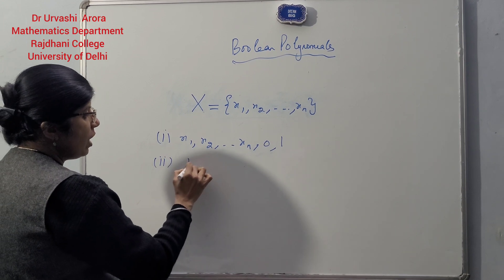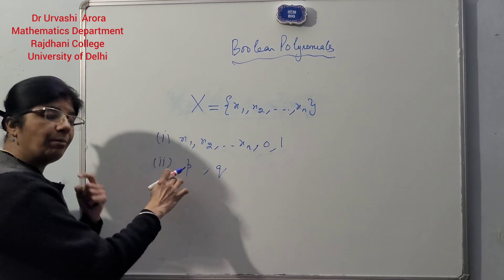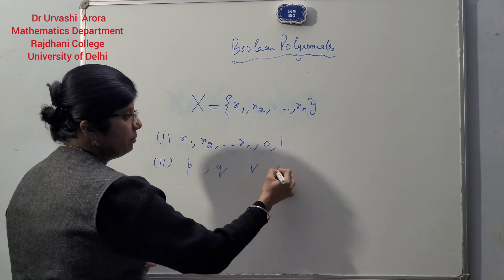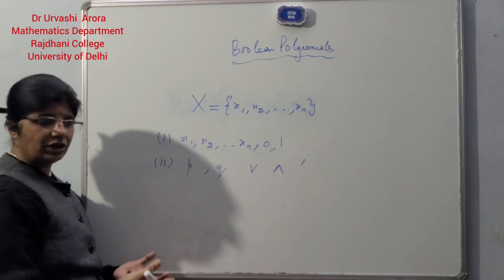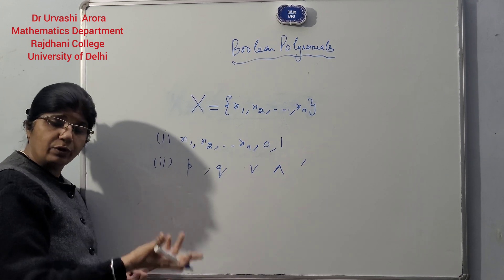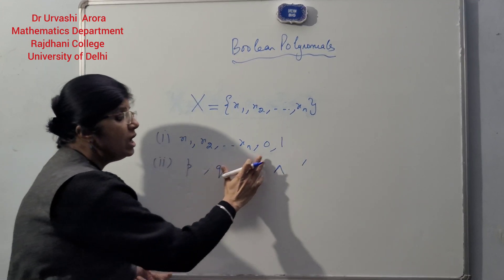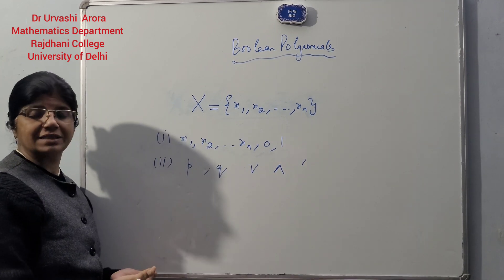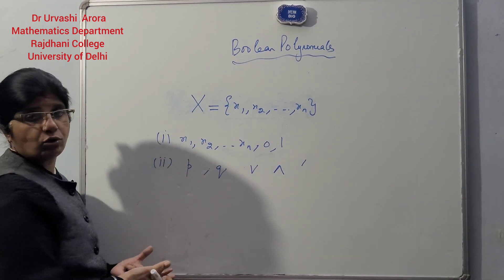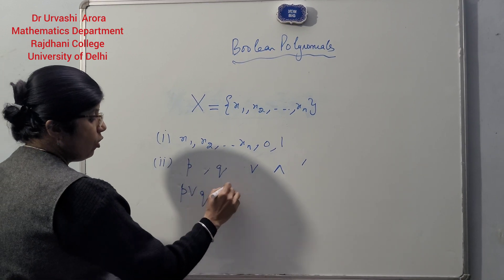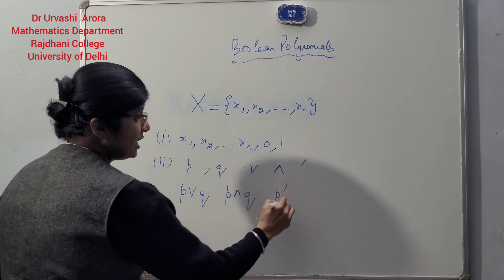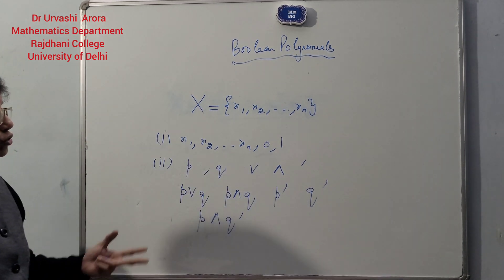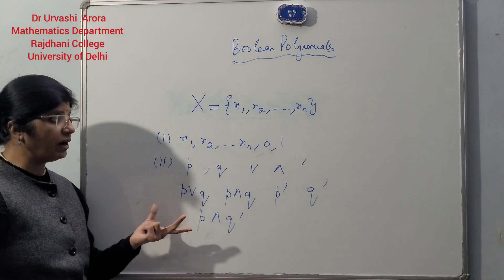Secondly, if p and q are any two Boolean polynomials, then any combination of these two Boolean polynomials done using the join operator, the meet operator, and the complement operator is also a Boolean polynomial. So if they are combined using these three operations — join, meet, and complement — we have already discussed these operators in my earlier videos. So p join q, p meet q, p dash, q dash, or p meet q dash — all these are Boolean polynomials. This is how Boolean polynomials are defined over the set of n symbols.